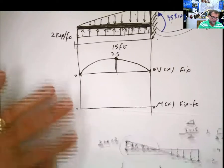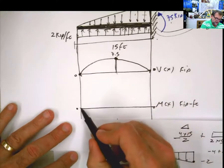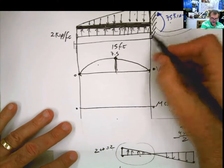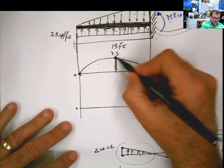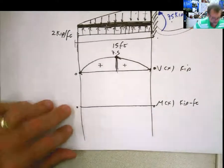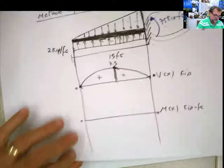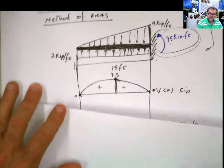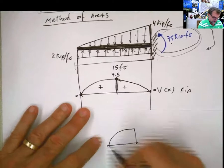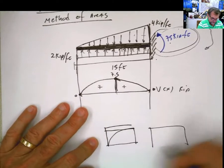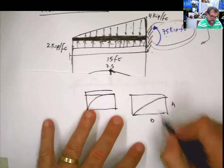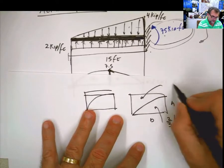Now let's do the moment by area. We need to know how it goes from here to here. I know there's a moment of 75 here, but I want to work with the area. Both areas are positive. I need to know how to calculate the area of the parabola. Remember: if you have a parabola with base b and height h, the area under the curve is two-thirds of b times h, and the remaining part is one-third of b times h.